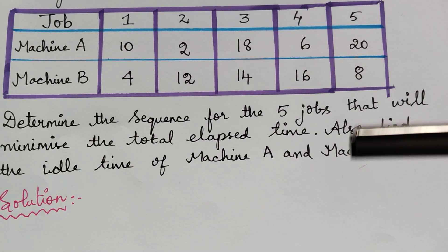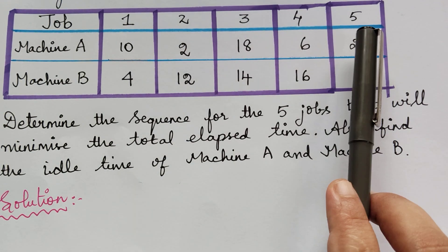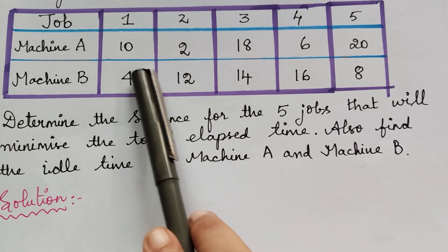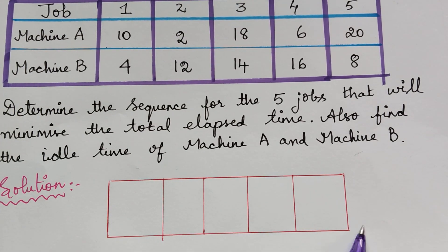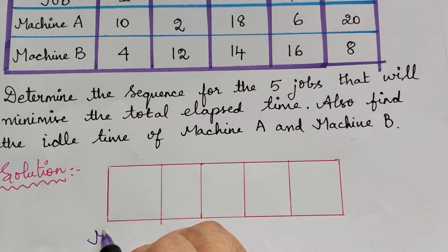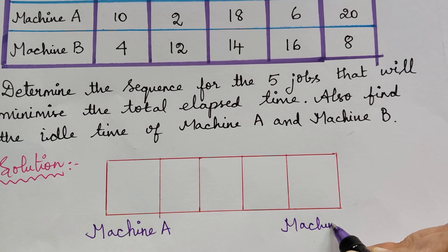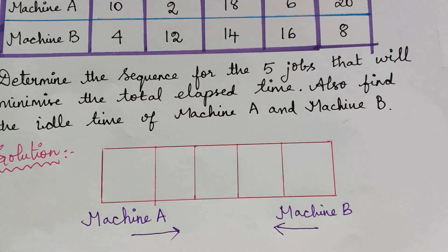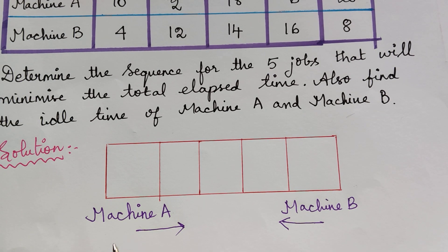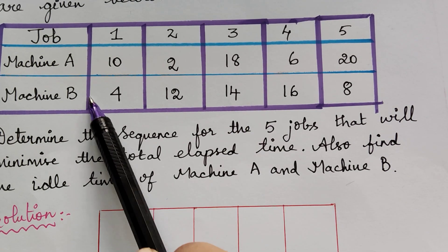We also have to find the idle time of machine A and machine B. The first step in solving this problem is we have to find the job sequencing, that is we have to find the order in which the jobs have to be performed. We have jobs from 1 to 5 and two machines, machine A and machine B. These have to be figured out in a box that indicates the order of jobs to be performed. On the left hand side we write machine A and to the right we write machine B.